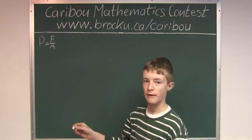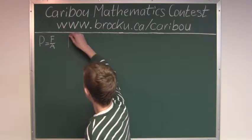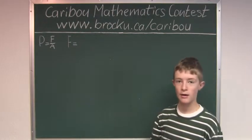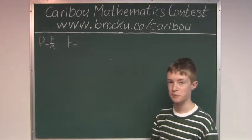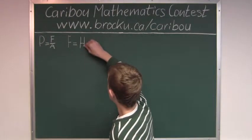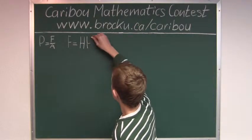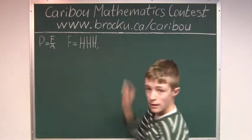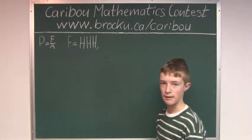So the favorable events are head, head, head, which is the first one, and tail, tail, tail, which is the second favorable event.